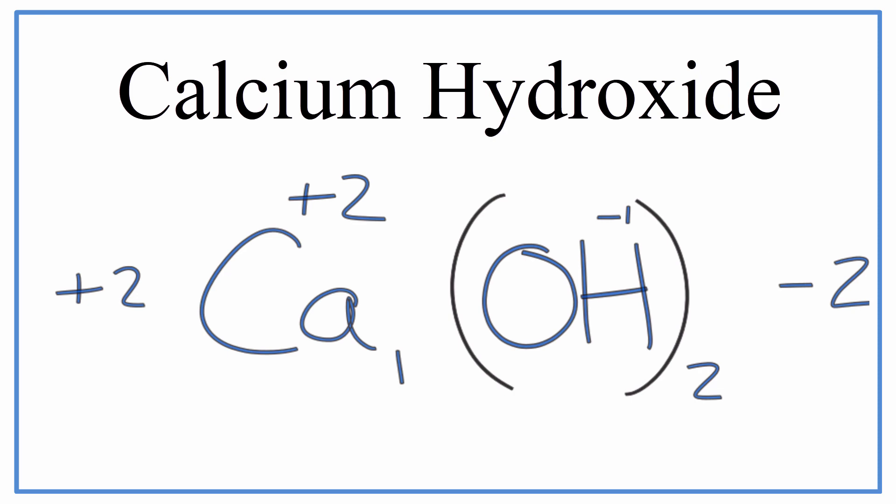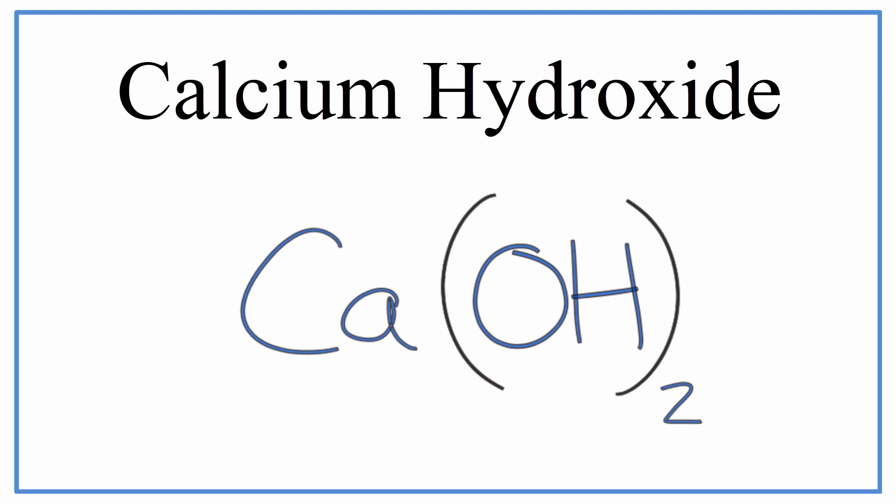So plus 2 and minus 2, they do cancel out, and I have a net charge of zero. So I'll clean this up, and I'll also get rid of this 1 right here. We don't need that. That's implied. And we now have the correct formula for calcium hydroxide.